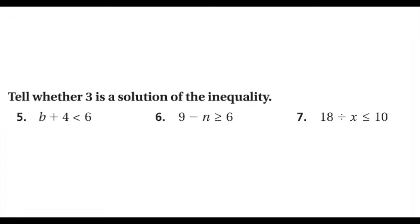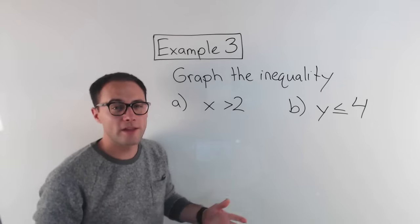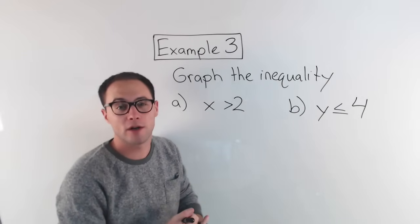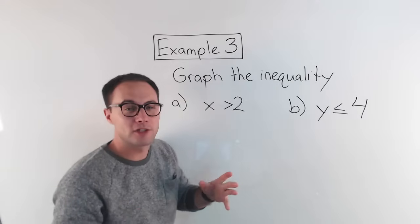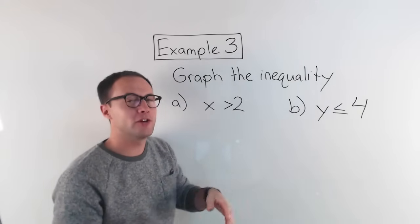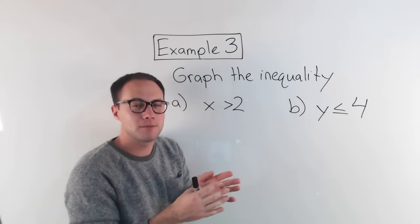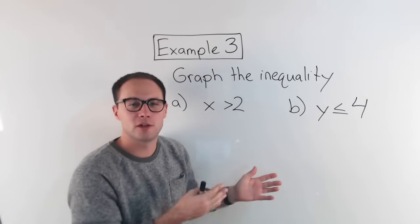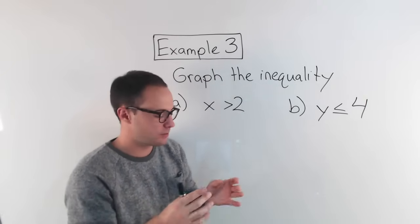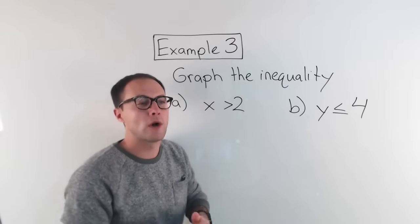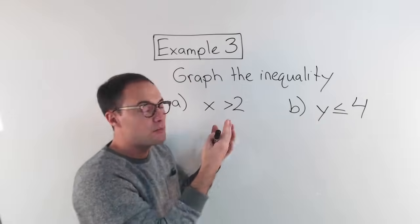Here's something to try on your own. This is our last example: graph the inequality. We've already written inequalities by translating from sentences, and we've looked at how to tell if a value is a solution. Now we're going to graph. Inequalities most of the time have more than one solution, and all those solutions together are called the solution set. A great way to represent that solution set is by graphing.